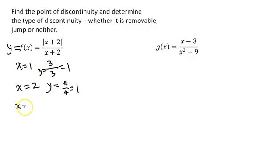However, if x is negative, say negative 3, then the moment when this becomes negative, the absolute value does do something. If x is negative 3, negative 3 plus 2 is negative 1 over negative 1, so it's positive 1 over negative 1, which is negative 1.